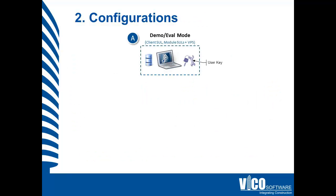Let's move on and take a look at the configurations. There are a variety of deployment options for the three VicoOffice components. The user side of the configuration is similar for all of these. However, if you're sharing projects or sharing licenses, in order to connect to these you will need a project or license server IP address, which you enter into the My Dashboard page inside VicoOffice.